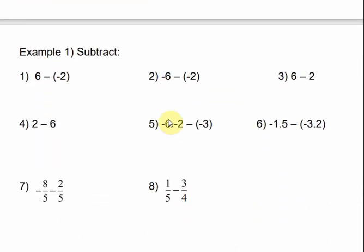Let's apply what we've just learned. Number 1: 6 minus negative 2. Always change two signs that are touching to one sign. These signs are the same, so that becomes a plus — so that's just 6 plus 2, which equals 8.